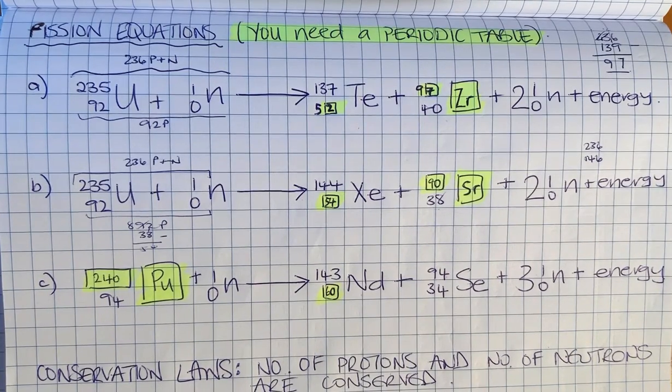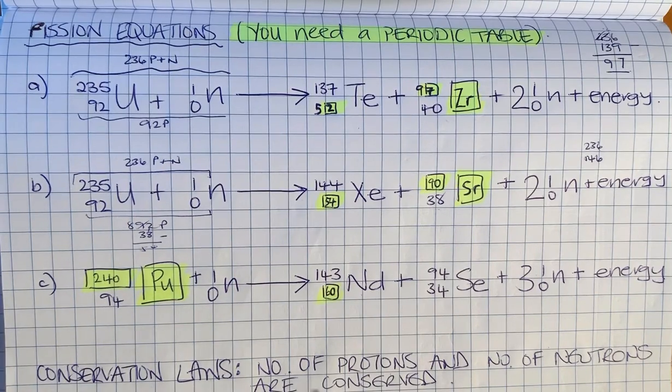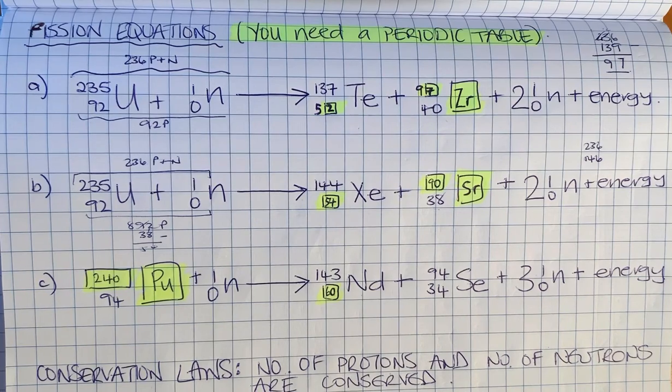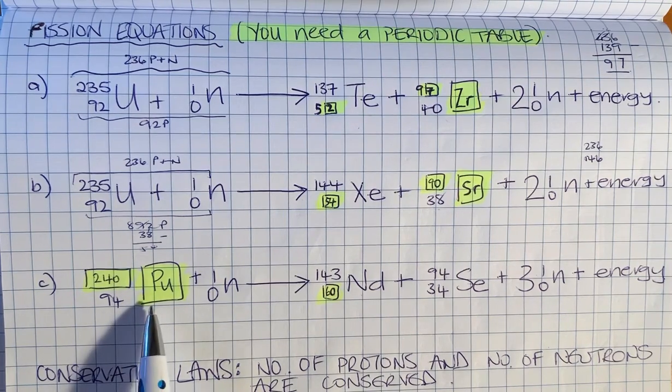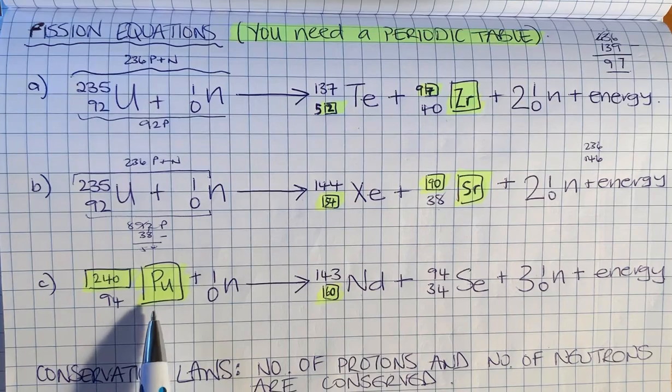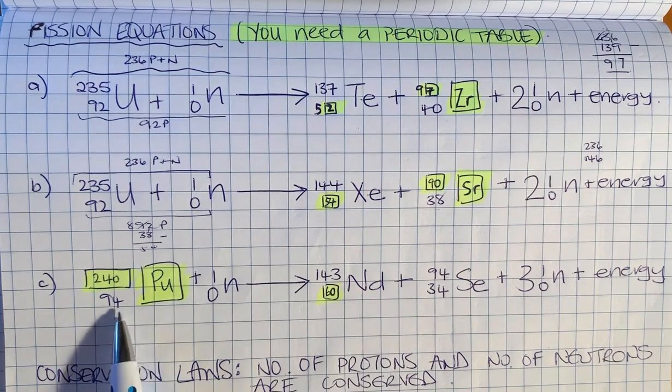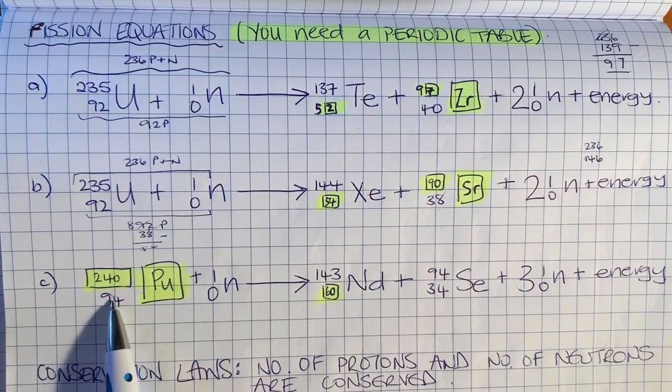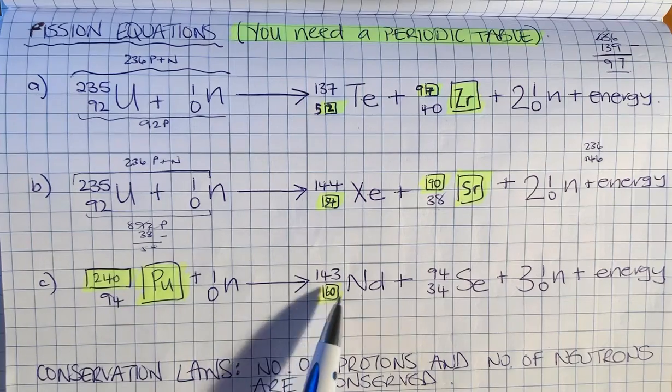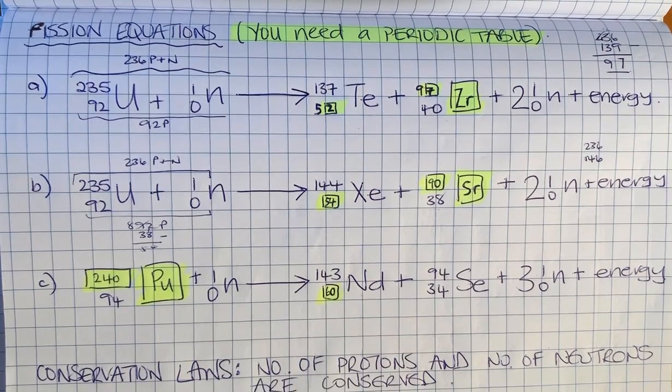That's how you do these fission equations. The number of neutrons and protons overall must be conserved. You'll need your periodic table to look up the elements, knowing that the number of protons determines the element.